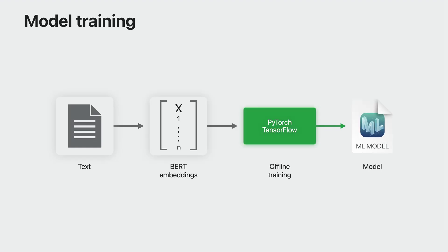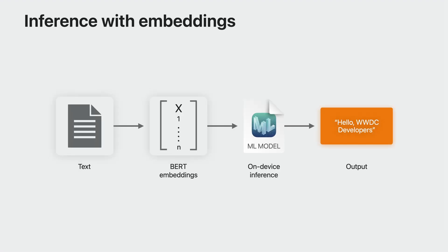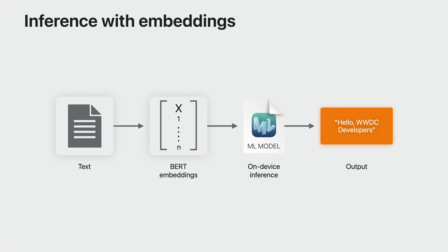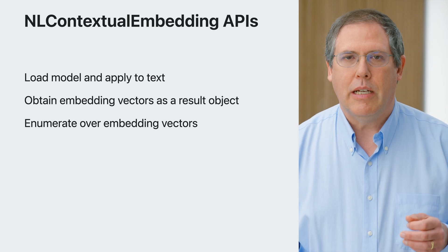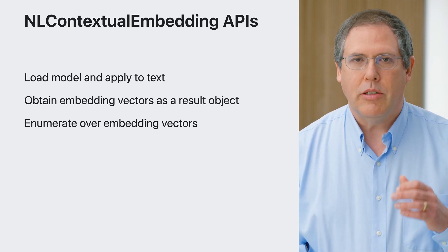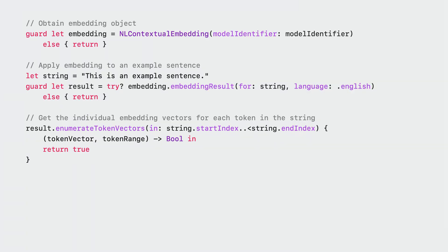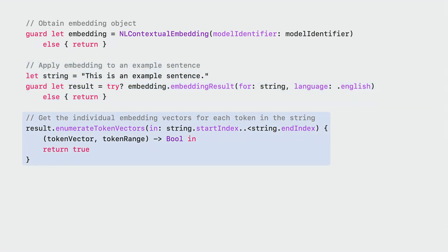Here's how that would work. On your macOS device, you would use NLContextualEmbedding to get the embedding vectors for your training data, then feed these as input to your training using PyTorch or TensorFlow and convert the result to a CoreML model using CoreML tools. Then at inference time on device, you would use NLContextualEmbedding to get the embedding vectors for your input data and pass them into your CoreML model to get the output. There are additional NLContextualEmbedding APIs that allow you to load a model, apply it to a piece of text, and get the resulting embedding vectors. You can use the model identifier to retrieve the same model used for training, apply it to a piece of text giving an NLContextualEmbeddingResult object, and then iterate over the embedding vectors.